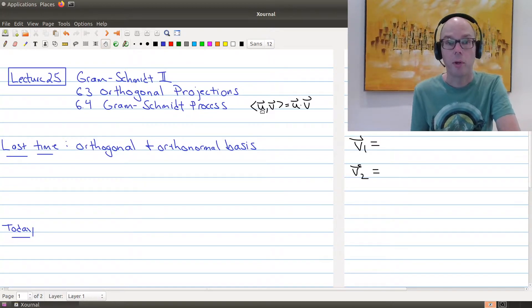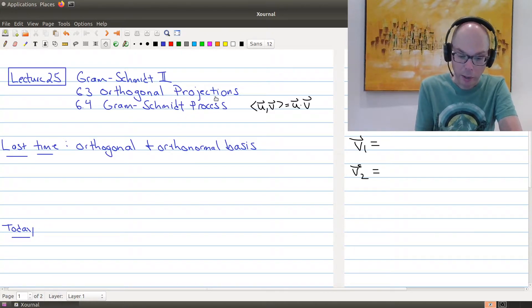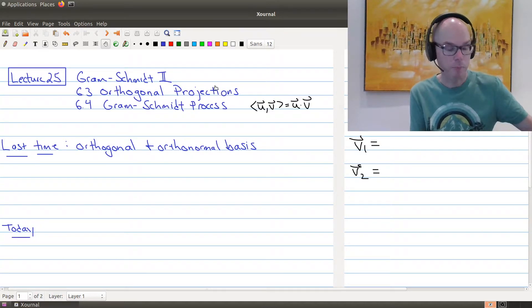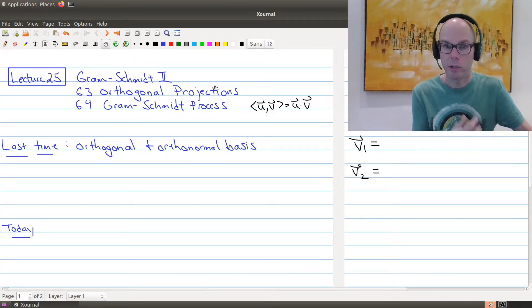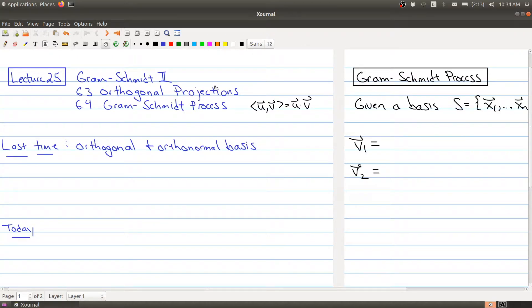So our goal today is actually to start off by explaining what the Gram-Schmidt process is, and then I'll talk a little bit about projections to kind of justify why this process actually works. In a second linear algebra course, you would actually go into the details about why all these pieces would work. But today, what we want to get across is the process of the Gram-Schmidt. So let's just kind of do a little recap.